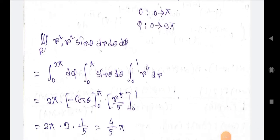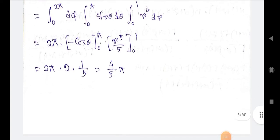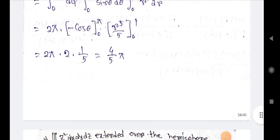The transformed integral I' becomes the triple integration of r² · r² sinθ dr dθ dφ. Separating: integration 0 to 2π dφ, times integration 0 to π sinθ dθ, times integration 0 to 1 r⁴ dr. Evaluating gives 4π/5, which is our answer.